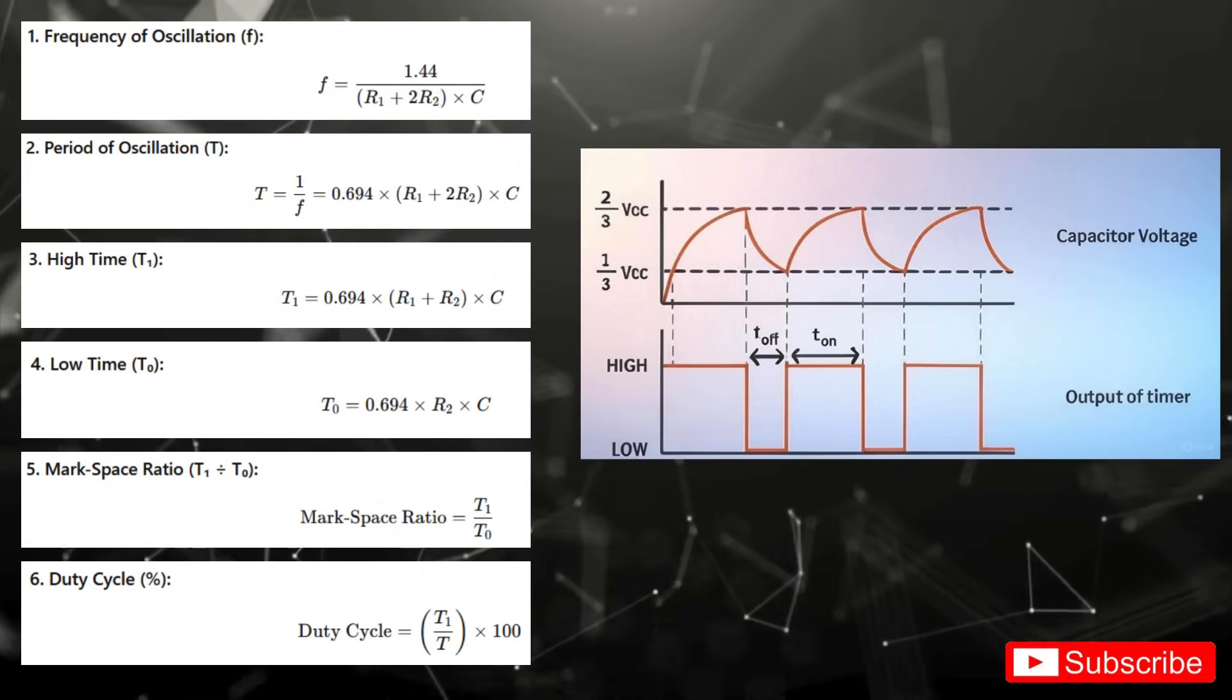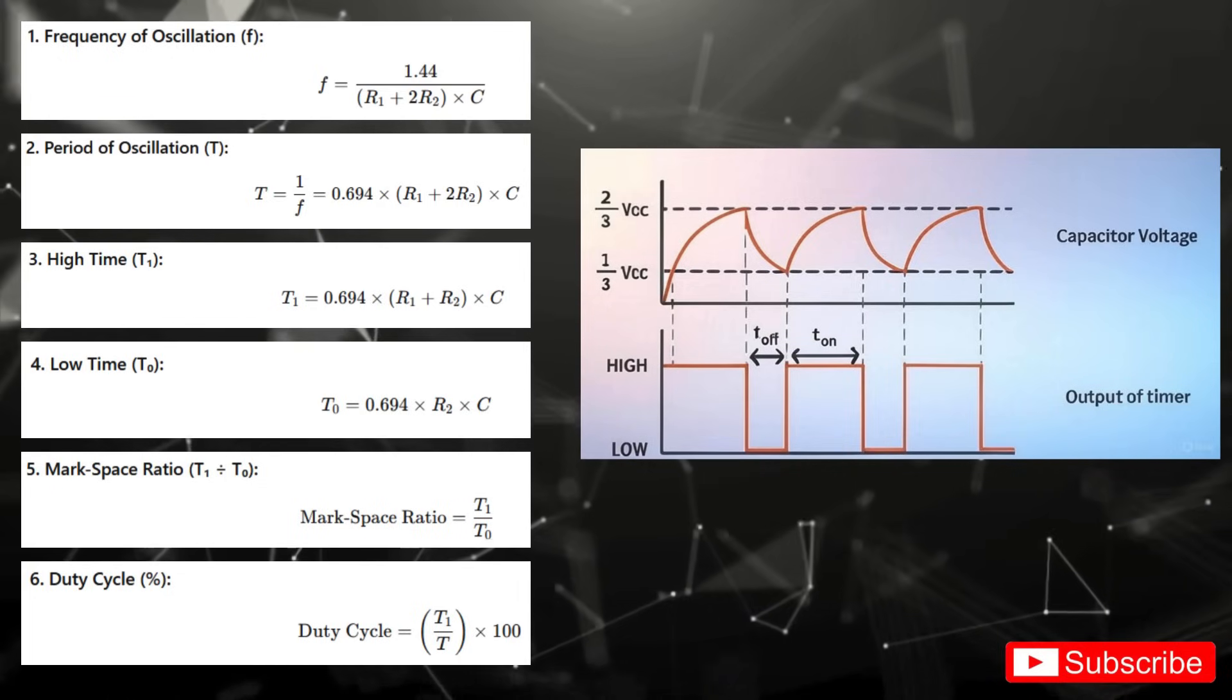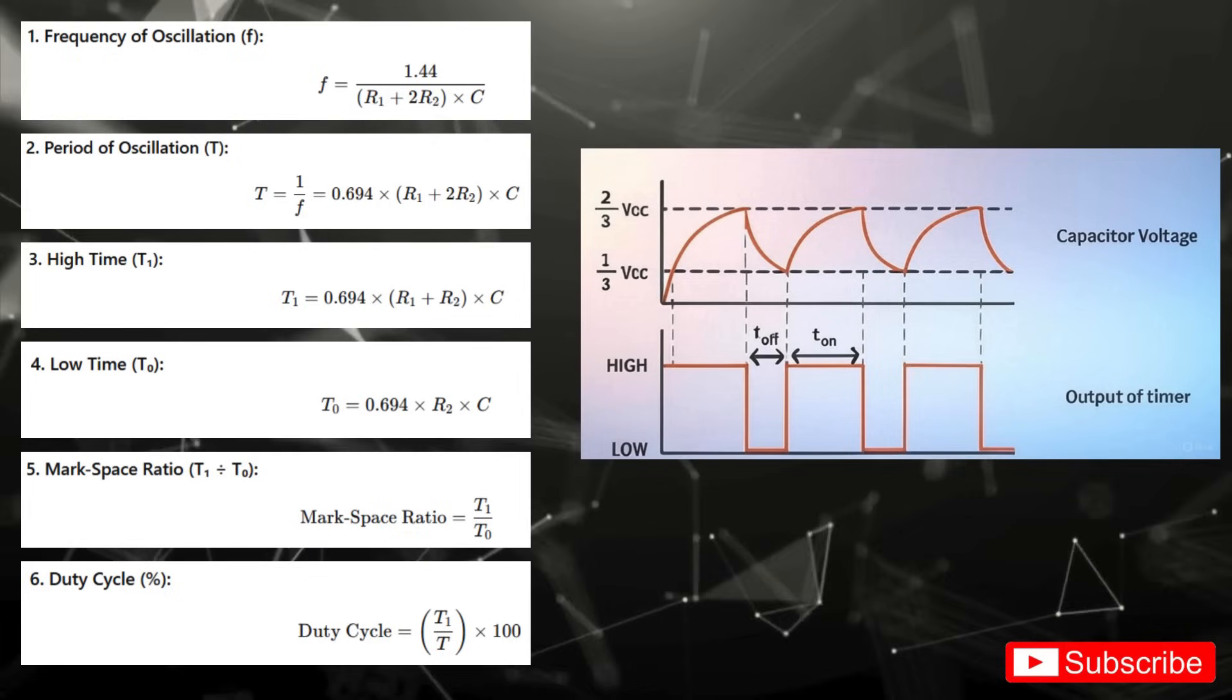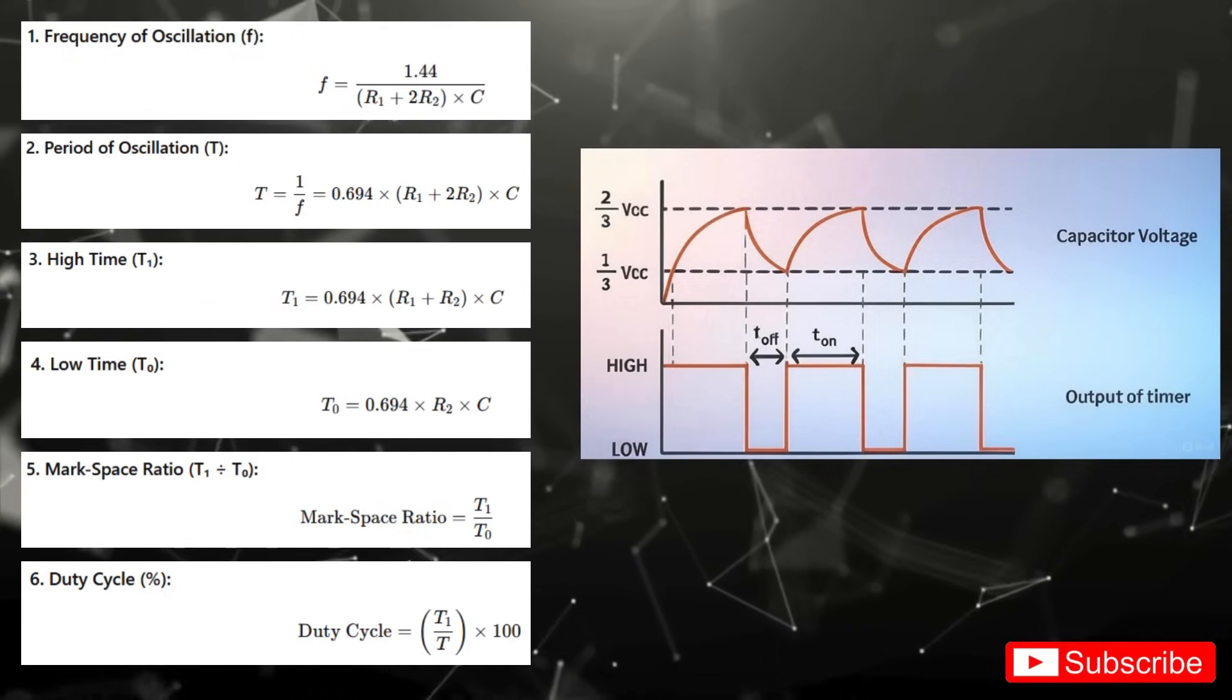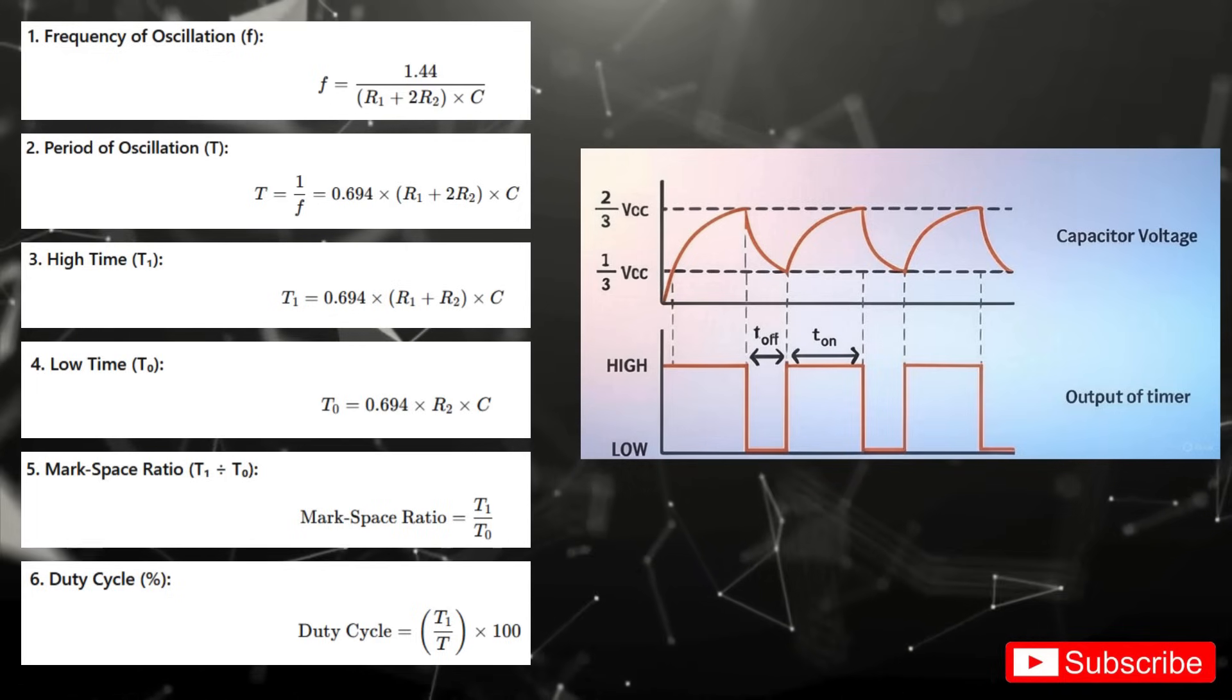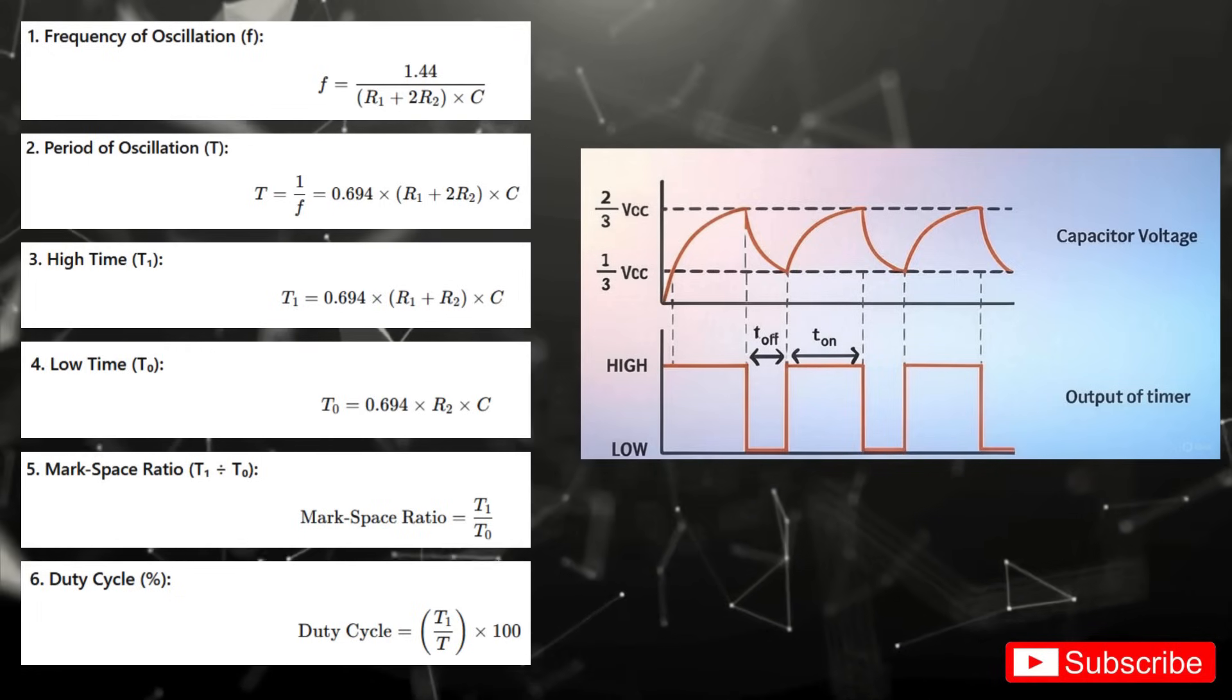A 50% duty cycle means equal time on and off. But with this specific circuit, perfect symmetry isn't possible because of how the resistors influence the timing. So how do we tweak it? Increase C and you slow the circuit down. Frequency drops. Adjust R1 and you lengthen the high time without changing the low. Boost R2 and both high and low times stretch, resulting in a lower duty cycle overall. These tweaks let you shape the signal precisely to your needs, whether you're blinking LEDs or modulating a waveform.